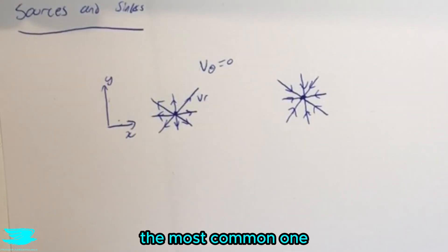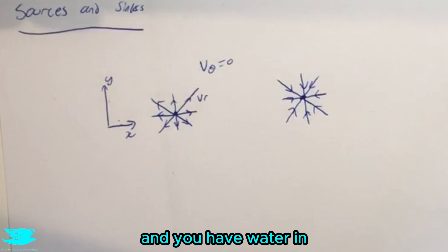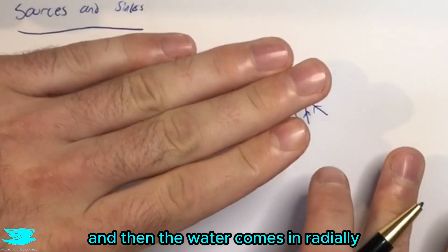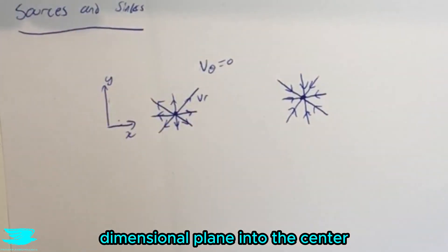So a common example, really the most common one is for a sink, is when you have literally a sink, for example like in a kitchen and you have water in there and then you unplug it and then the water comes in radially inwards in a two-dimensional plane into the center.